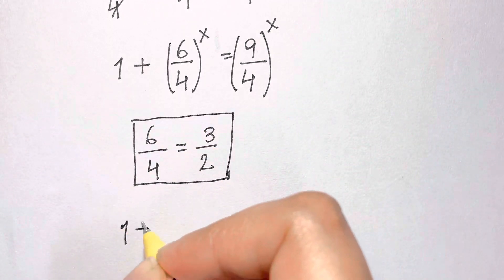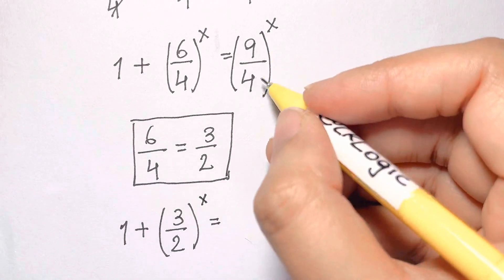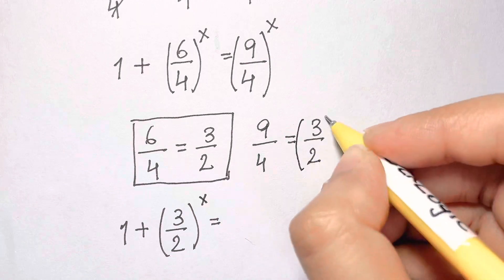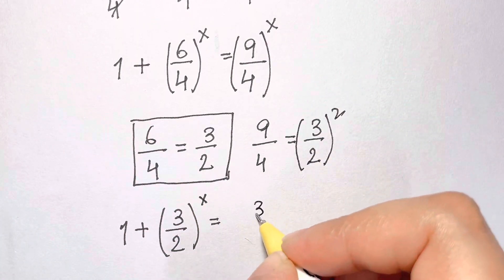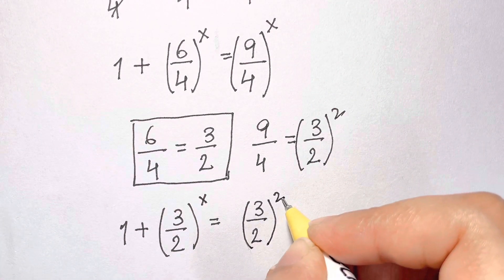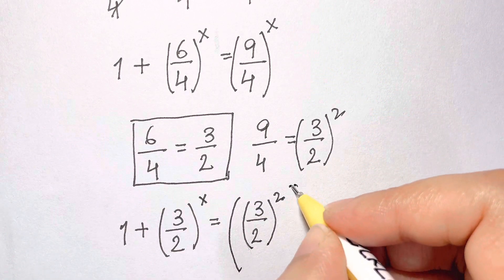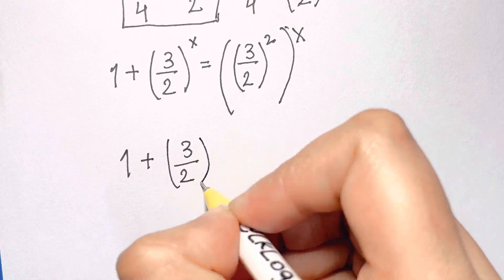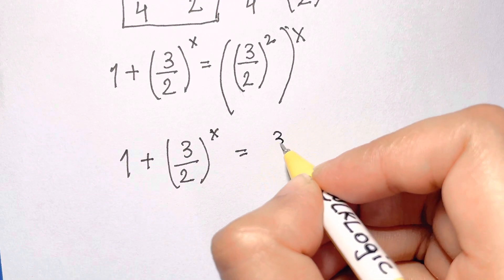6 over 4 is equivalent to 3 over 2, and 9 over 4 is equivalent to 3 over 2 squared. We'll substitute those in. This equals 3 over 2 all raised to x. We now simplify 3 over 2 squared all raised to the power of x. This becomes 3 over 2 all raised to the power of 2x.